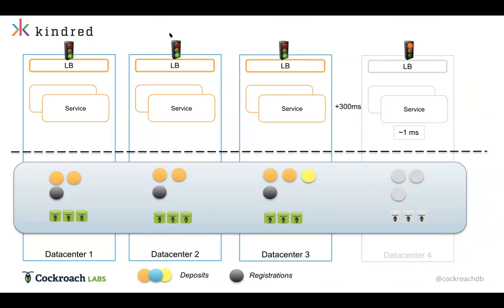Jim noted that the decision about which data center holds which data is truly driven by the context of regulation — data has to be held in that particular location. Kai confirmed: this illustrates scenarios we may end up having to deal with. The ability to control this at the database and infrastructure level, and to do changes to this if jurisdictions change in an online fashion without bringing services down — that's a really strong property to have.